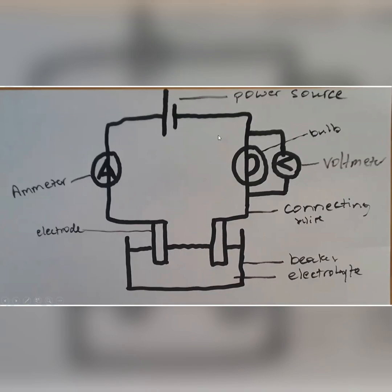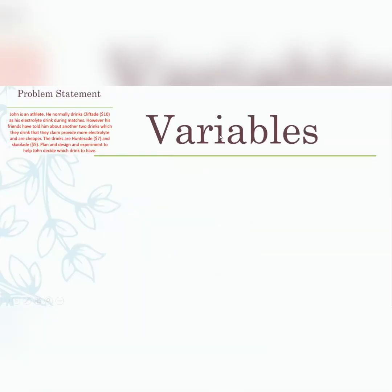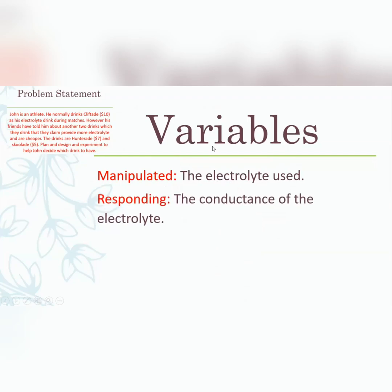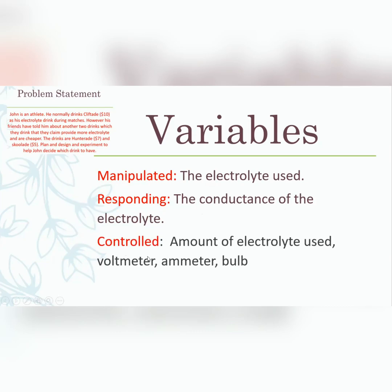For variables: the manipulated variable is the electrolyte being used. The responding variable — having changed the electrolyte — is the conductance, though voltage and current may also be affected. Ultimately we want the final goal of conductance. Controlled variables include the amount of electrolyte used, the voltmeter, ammeter, and bulb — we must keep everything the same except the electrolyte.